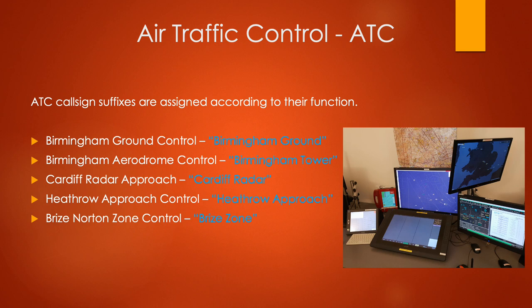Birmingham Tower is the aerodrome control, with the suffix indicating the type of control offered. Cardiff Radar is another example — Cardiff is the location, and radar approach indicates a service to aircraft not in the vicinity of the aerodrome but seen on a radar screen.